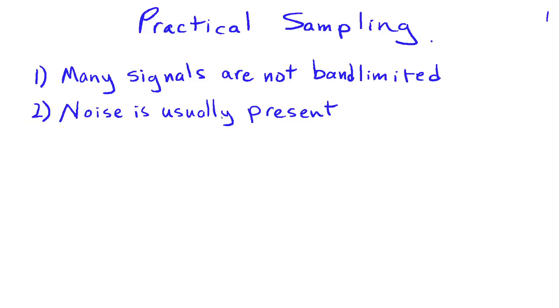We've been discussing sampling from an ideal perspective, where we have a band-limited signal. We saw that the sampling theorem said that if we sample the signal at a rate that corresponds to twice the highest frequency in the signal, that we can do perfect reconstruction.